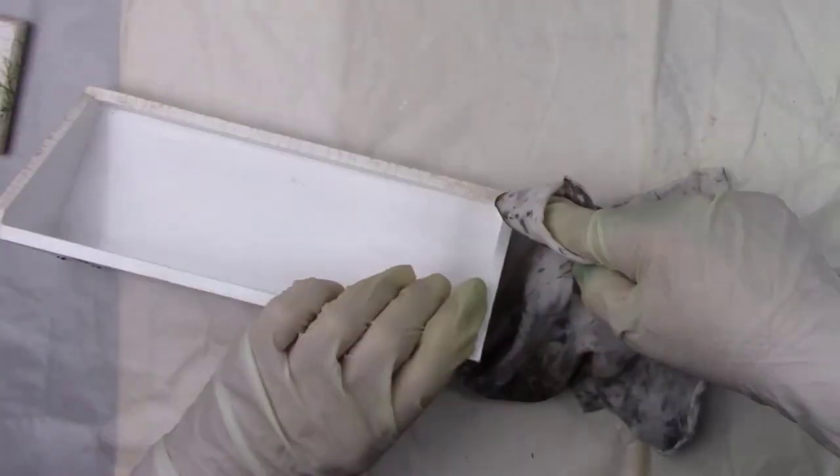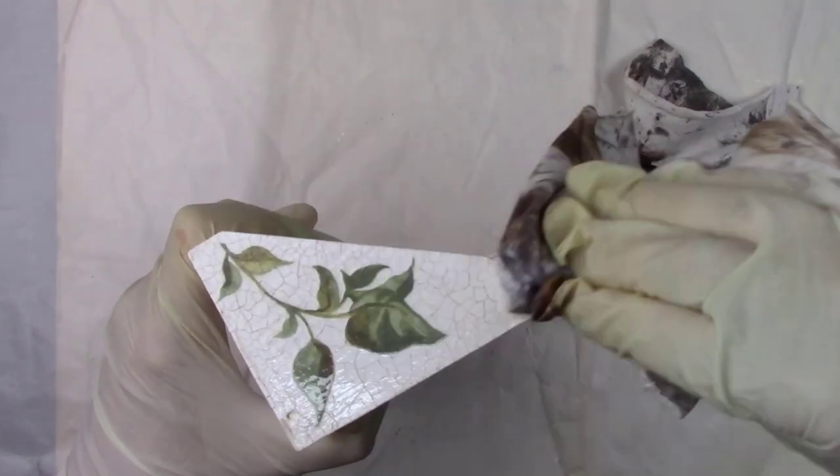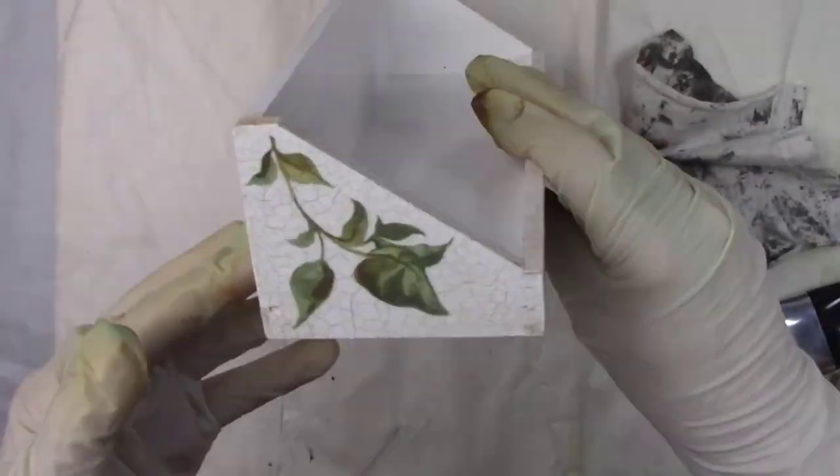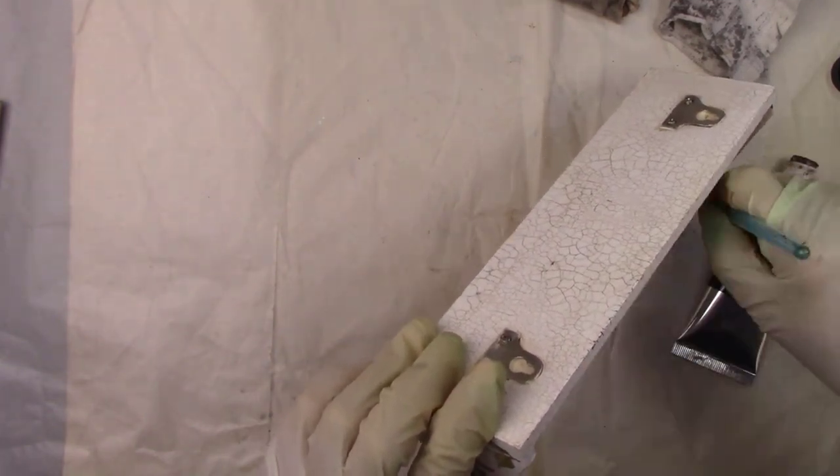For instance, if you painted this project in black, you could use white oil paint to make your cracks stand out. And I think that would actually look beautiful.